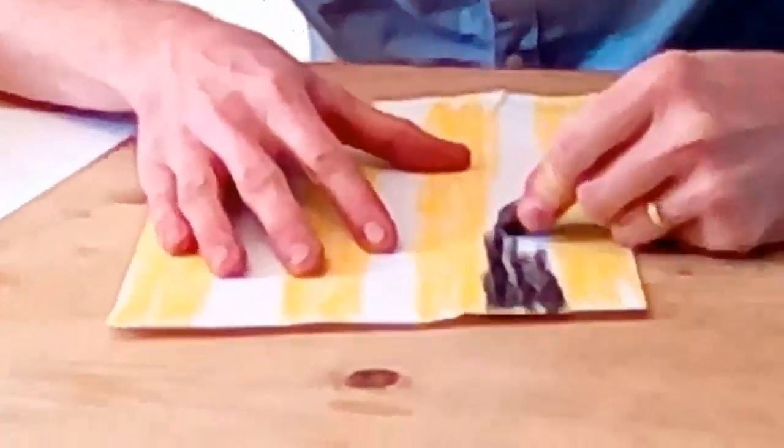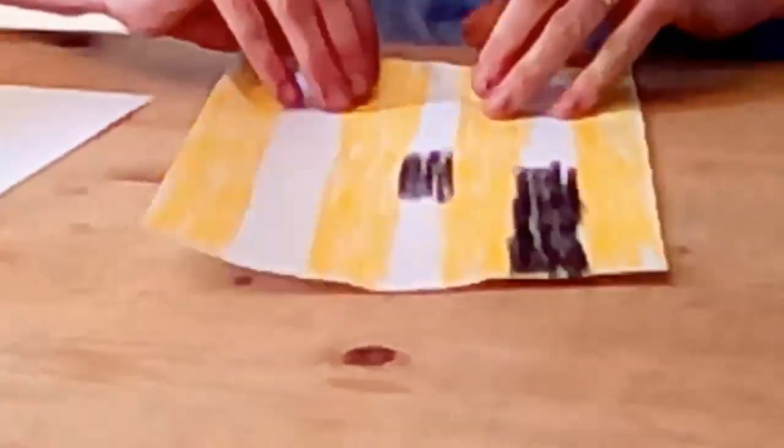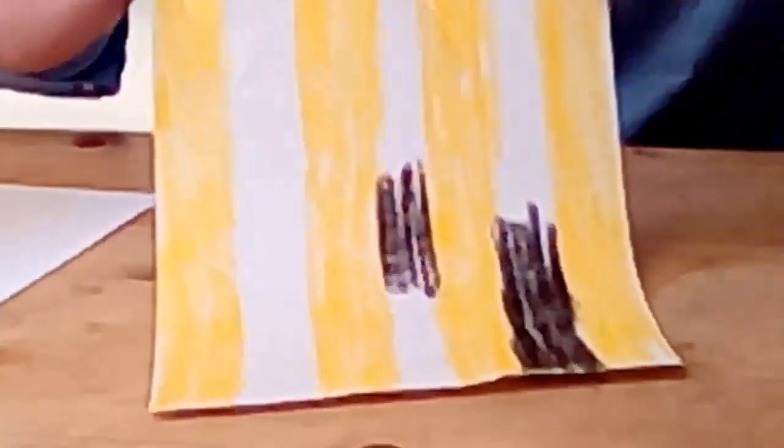Take a piece of paper lengthways, with black and yellow stripes like this. I'm going to fill in all these white areas with black.